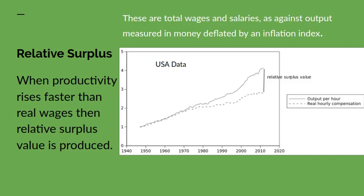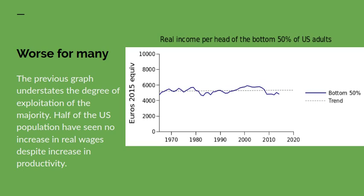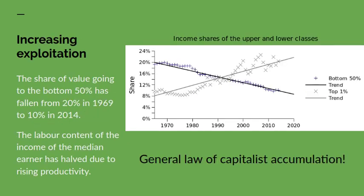There is some controversy as to whether this real wage line was correctly deflated. But we can disregard that controversy because other data shows that the real income per head for the bottom 50% of the US working population has actually been stagnant — there hasn't been any rise for half of the US population since the late 1960s. This is basically what Marx assumes when dealing with relative surplus value: that real living standards remain stagnant and the growth in productivity goes to the upper classes.